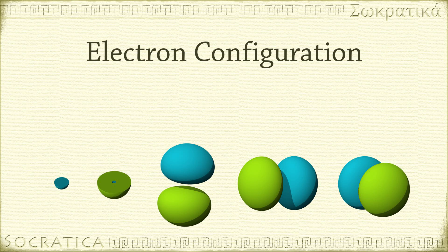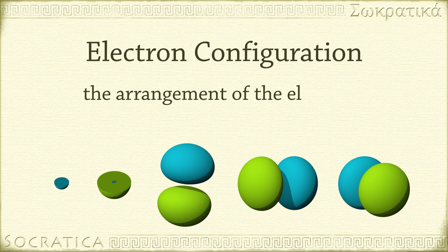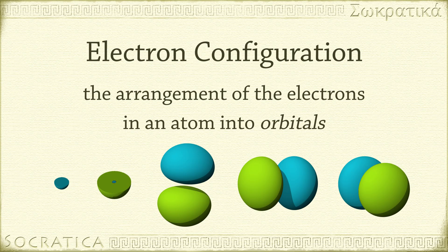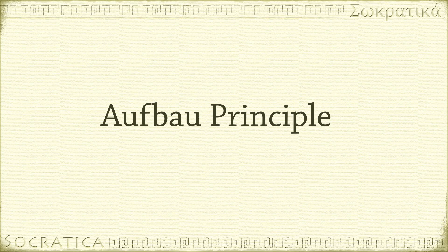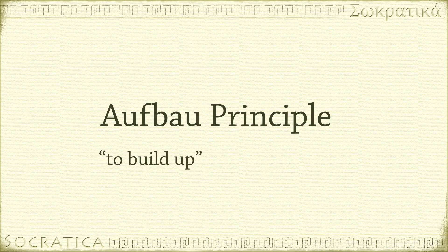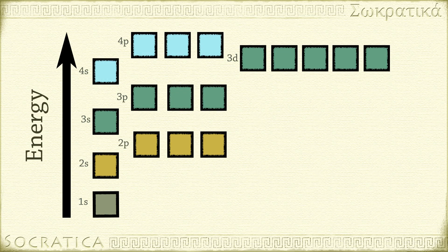Electron configuration refers to the arrangement of the electrons in an atom into orbitals. To determine the electron configuration of an atom with multiple electrons, we follow something called the Aufbau Principle. Aufbau is a German word that means to build up, and that's what you do in this process. You build up the electron configuration from the bottom up in this diagram of orbitals. Electrons seek the lowest energy state, starting with the 1s orbital.